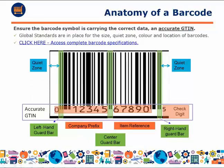The purpose of a barcode is to carry information about a product, so the first step in creating a barcode is to ensure that the GTIN — the number underneath the barcode — is absolutely accurate. There are global standards in place that govern the size, color, and location of barcodes. You can click this link to access those detailed specifications.